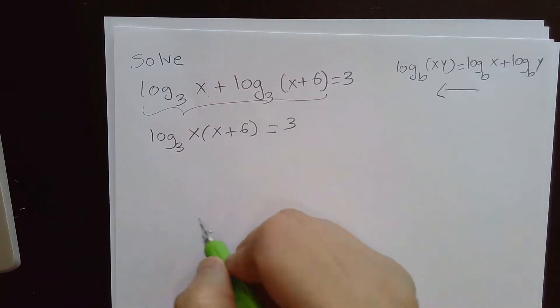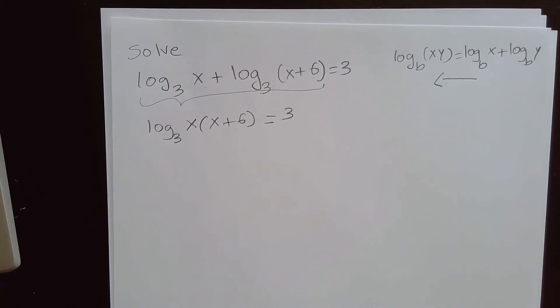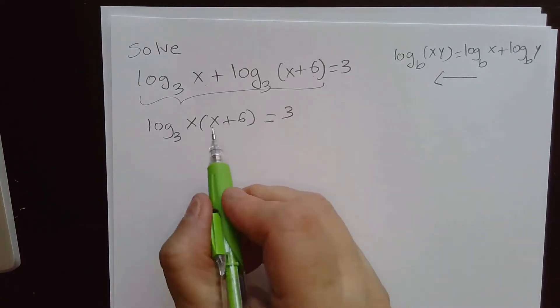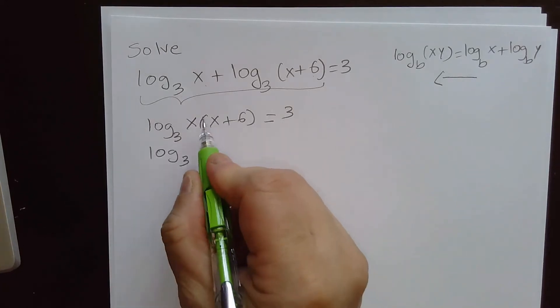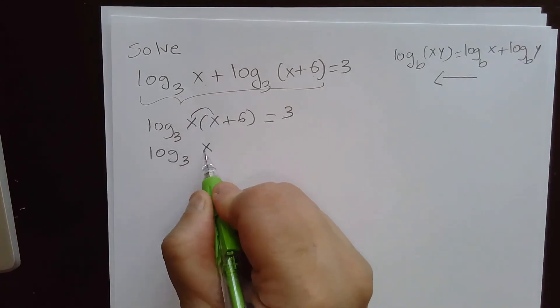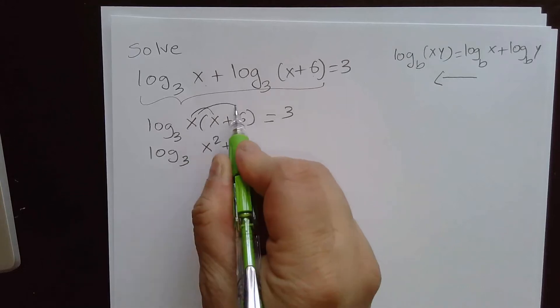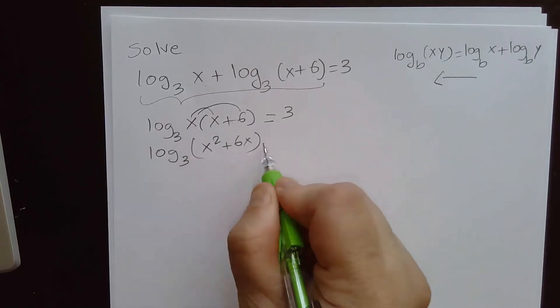Now we have a logarithmic equation with only one log on one side. That's what we want. We can simplify this first. So we get x times x that gives us x squared plus x times 6 that's 6x and that is equal to 3.